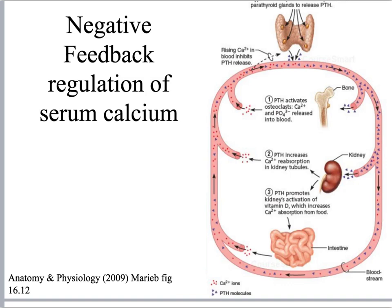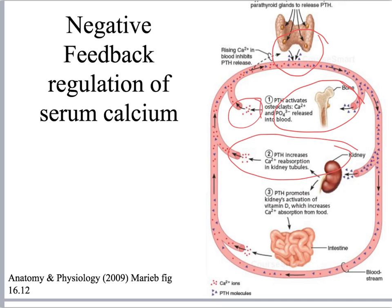In summary, the negative feedback regulation of serum calcium works as follows: when the parathyroid glands sense low calcium in the blood, they secrete increased amounts of parathyroid hormone, which stimulates the bone to release more calcium into the blood, stimulates the kidney to resorb more calcium from the forming urine, and stimulates the kidney to activate vitamin D to increase calcium absorption from food. All of these together increase serum calcium, which down-regulates the release of parathyroid hormone.